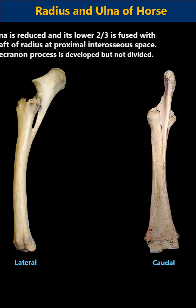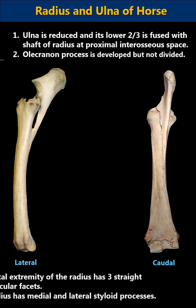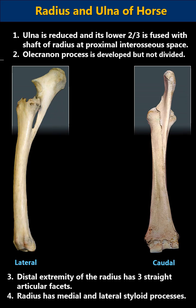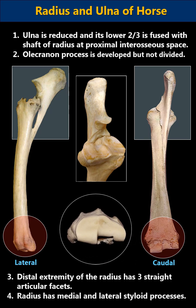In horse, the ulna is reduced and its lower two-thirds is fused with the shaft of the radius. At the interosseous space, the olecranon process is developed but not divided. The distal extremity of the radius has three straight articular facets. The radius has medial and bilateral styloid processes.